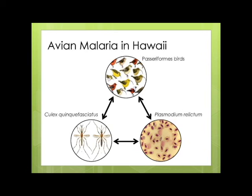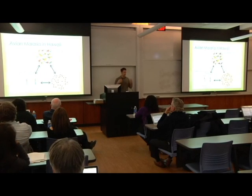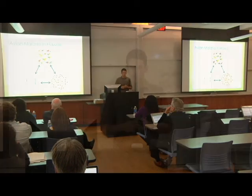Hawaii has the highest rates of avian extinction of anywhere else in the world. Since 1980, over 10 novel species have already become extirpated from this area. The passeriform birds — honey creepers, the Hawaiian crow — are the most affected. Plasmodium relictum is the main type of avian malaria I want to discuss. Like human malaria, there are different strains, but this is the big one in Hawaii. These birds have contact with this pathogen, which is very deadly to them.